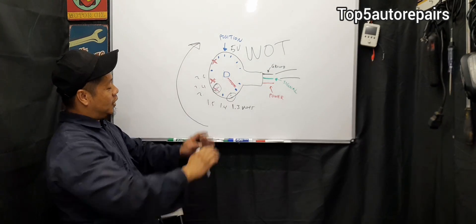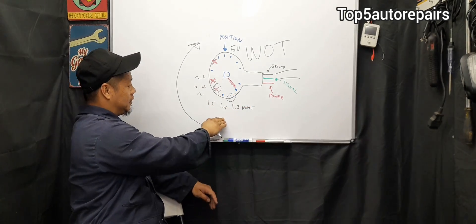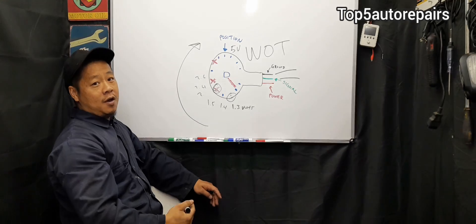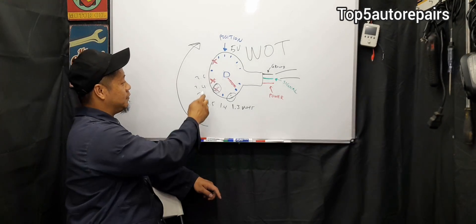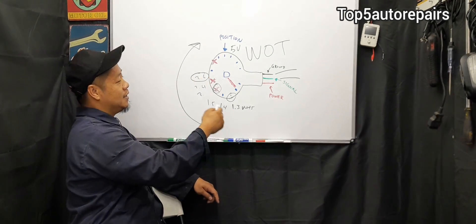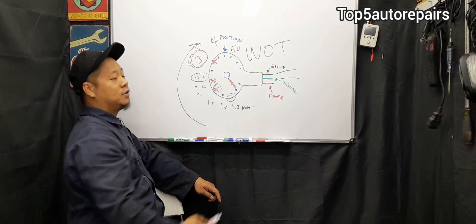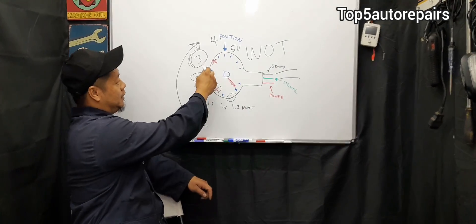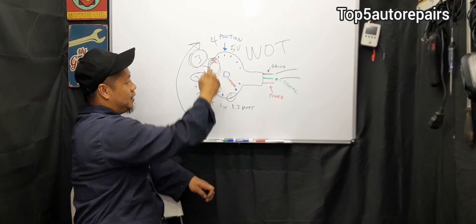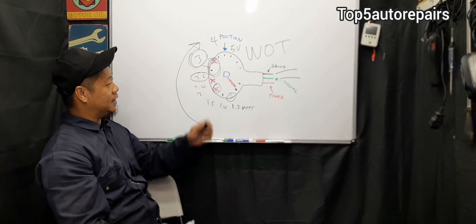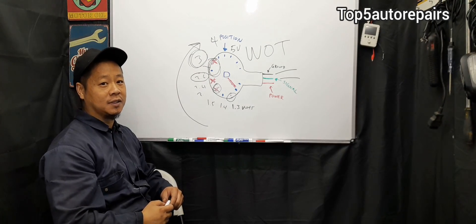As you are stepping on the gas pedal, the voltage should gradually increase. When you see a sudden spike in voltage, for example, from 2.6 it suddenly jumps to 4 volts, and you're missing 3 volts, well, guess what? The contact point over here is worn, and that's how you know the TPS sensor is faulty and should be replaced.